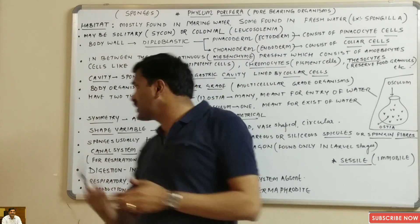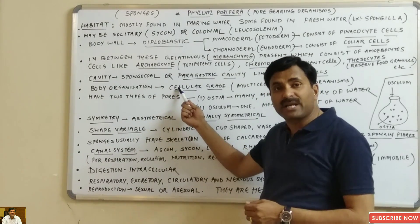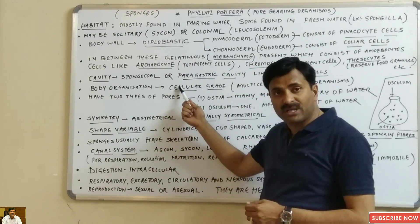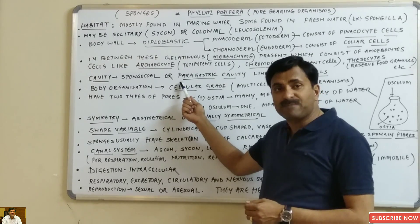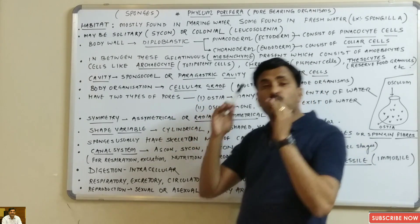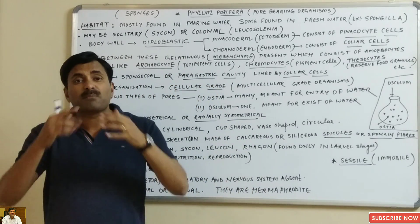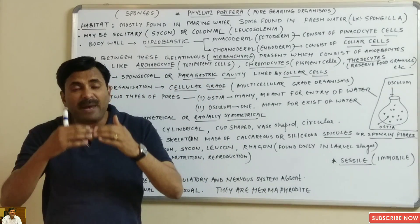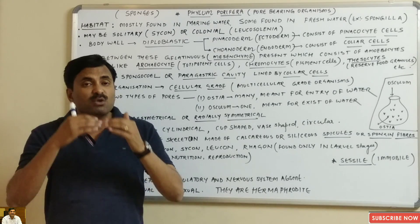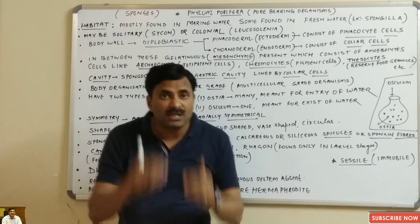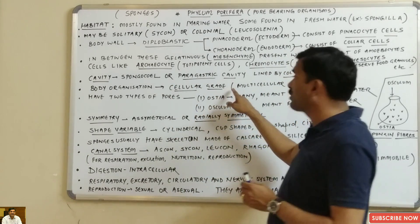If we talk about body organization, they are having cellular grade of body organization. This means that tissues are absent — though they are lower-grade multicellular organisms, the cells are loosely packed and not able to form tissues. So though they are multicellular, they have a cellular grade of body organization.